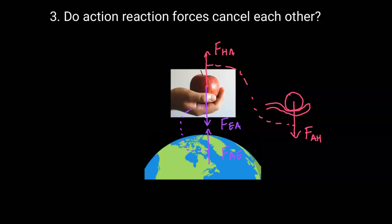The key point is that action-reaction forces act on different objects, so they can't cancel each other out. Now, the forces on this apple are balanced — that is true — however, those two forces acting on the apple are not action-reaction forces. The drawing shows what the actual action-reaction force pairs are.